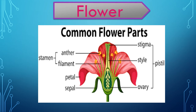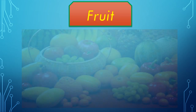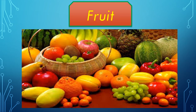The stamen is made up of two parts: anther and filament. The female reproductive part of the plant is the gynoecium. A single member of the gynoecium is known as a pistil, which is divided into three parts: the upper sticky part known as the stigma, the middle hollow tube-like part called the style, and at the base there is an ovary which contains ovules. The ovary is converted into fruit, while the ovules present in the ovary are converted into seeds.